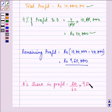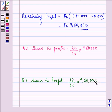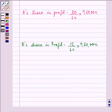So we have A's share in profit as 20 upon 60 into 9,60,000. Similarly, we have B's share in profit as 15 upon 60 into 9,60,000. C's share in profit as 12 upon 60 into 9,60,000.